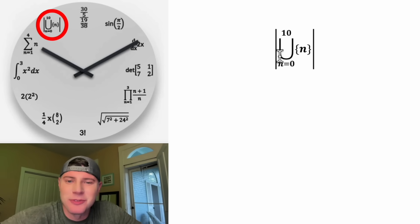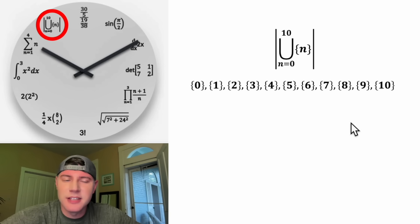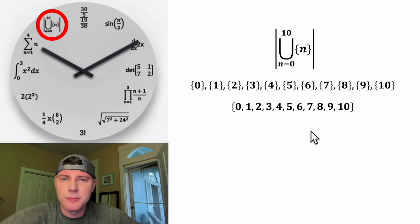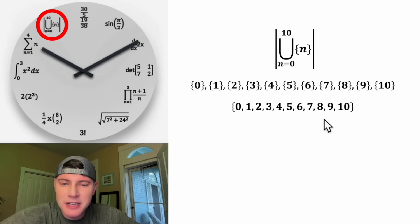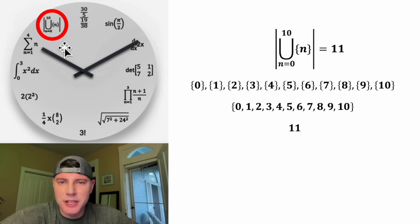Now what's going on with this one? This is the cardinality of the union of sets from 0 to 10. The union of all these sets brings them together into a single set: 0, 1, 2, 3, 4, 5, 6, 7, 8, 9, 10. The absolute value bars here mean cardinality — it wants to know how many elements are inside the set. There are 11 of them, so the cardinality is 11, and that's why it's in this spot.